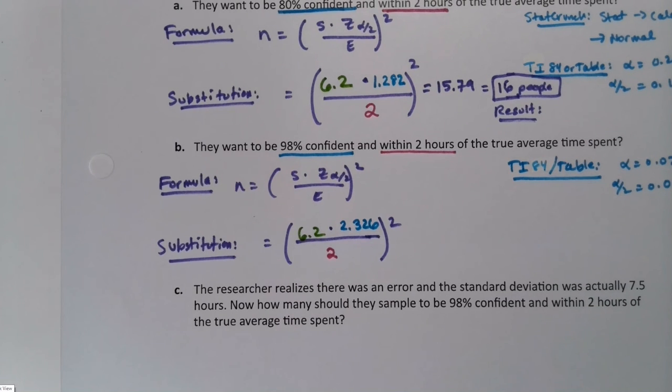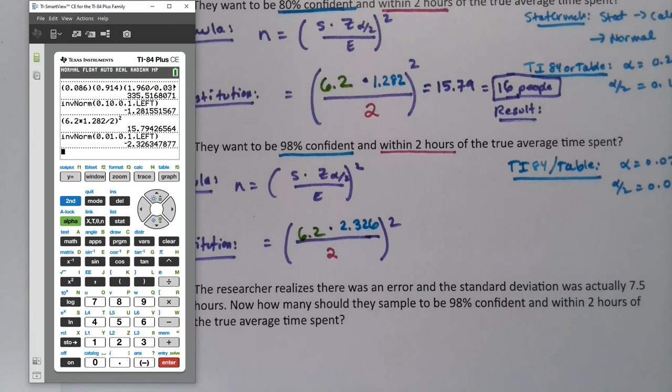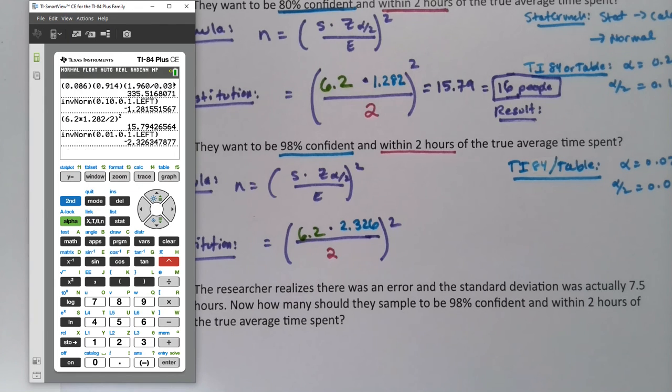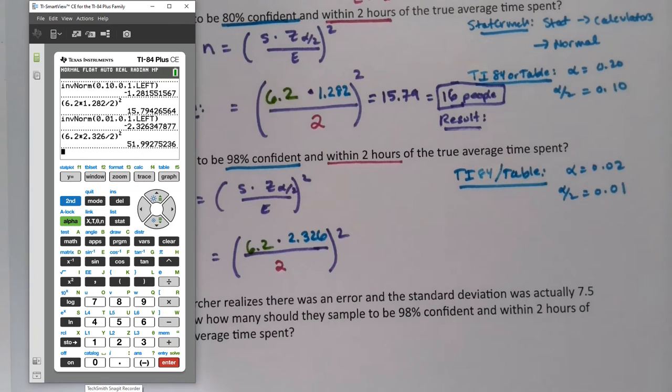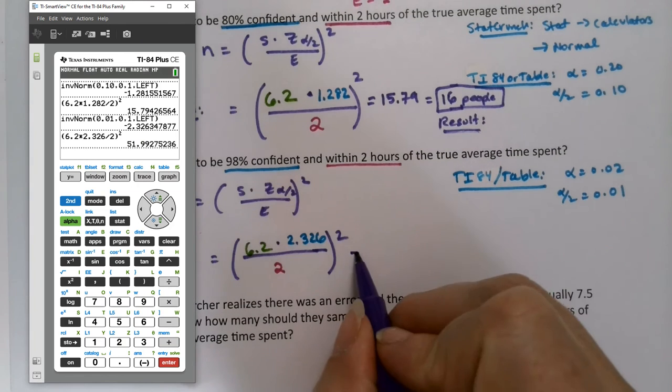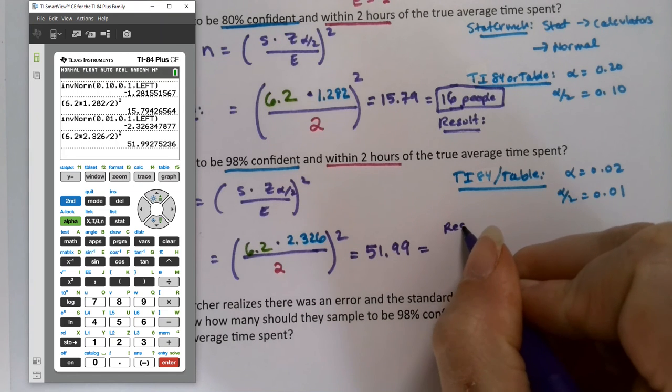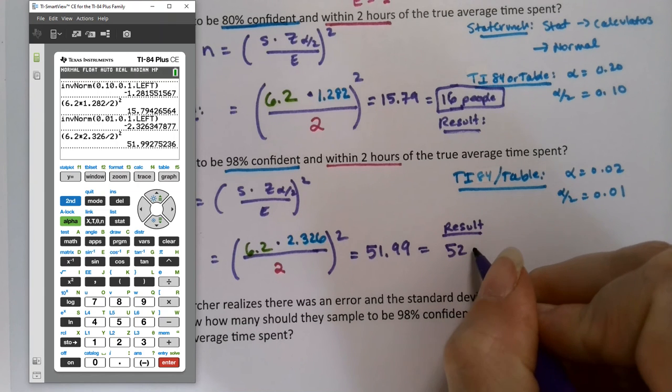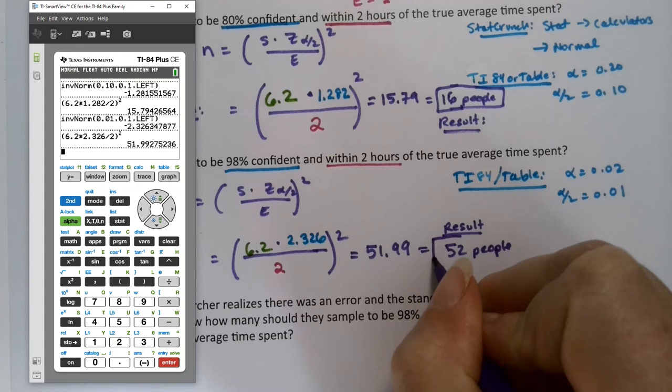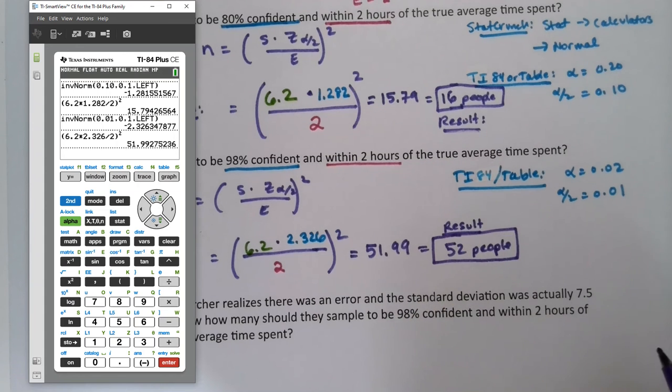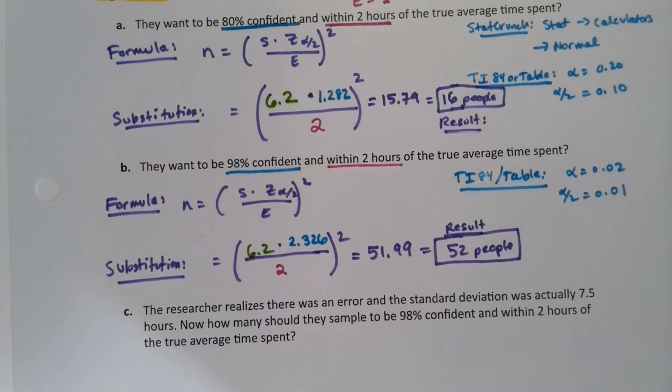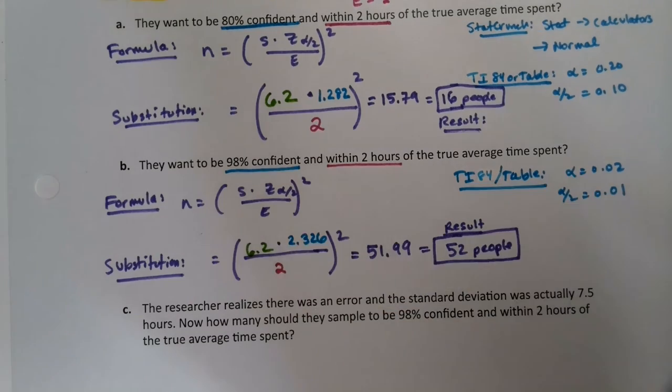So now I still have to do this calculation. Parentheses 6.2 times 2.326 divided by two, close parentheses, and then square it. 51.99. So it grew. It went up 51.99, which is the results of 52 people. That was an easy rounding to do. I think it was pretty obvious that we were going to go up there. But you go up even if it's less than 0.5, you always go up.